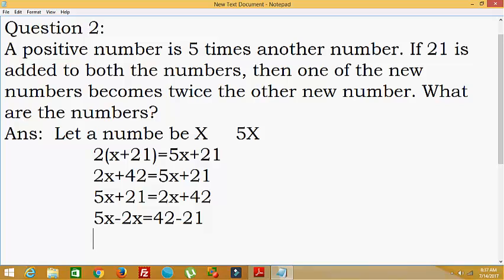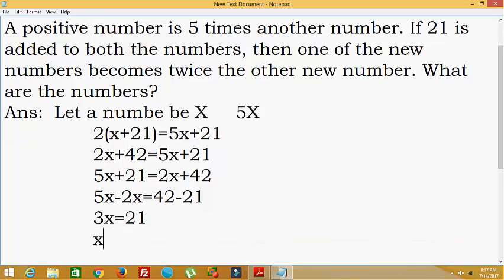5x minus 2x is equal to 3x, which is equal to 42 minus 21, which is equal to 21. So x is equal to 21 divided by 3, which is equal to 7. So the value of x, one of the numbers will be x.